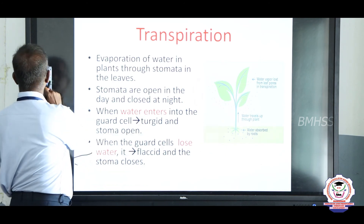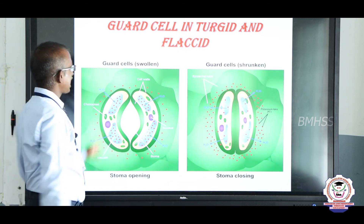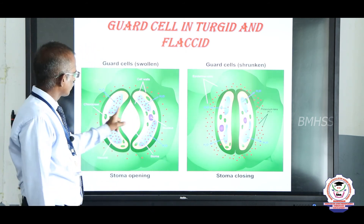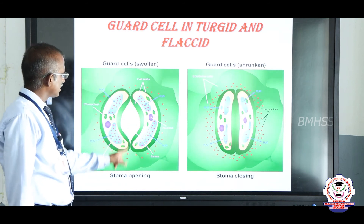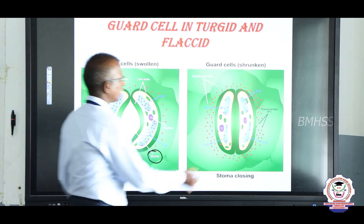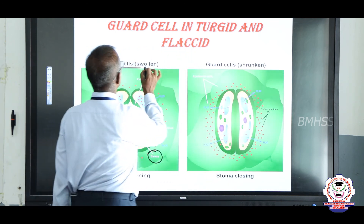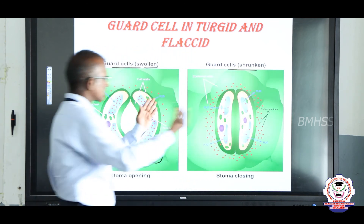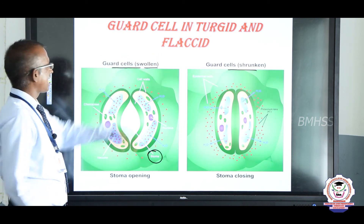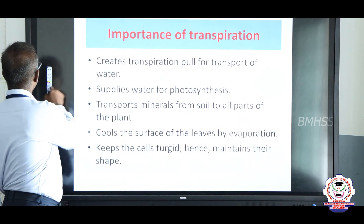The gap between the two guard cells is called stoma. The stoma will be closed when guard cells become shrunken. Guard cells exist in two conditions: turgid condition, when stomata are open, and flaccid condition, when stomata are closed.